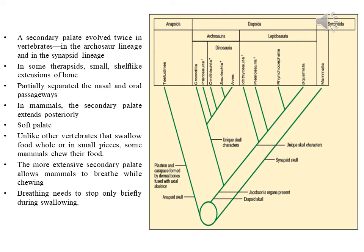A secondary palate evolved twice in vertebrates: in the Archosaur lineage and in the Synapsid lineage. In some therapsids, small shelf-like extensions of the bone partially separated the nasal and oral passageways. In mammals, the secondary palate extends posteriorly by a fold of skin called the soft palate, which almost completely separates the nasal passages from the mouth cavity. Unlike other vertebrates that swallow food whole or in small pieces, some mammals chew their food, and the extensive secondary palate allows mammals to breathe while chewing.